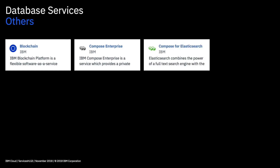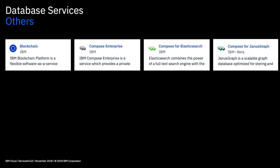Next up we have Compose for Enterprise — if you want to run one of these Compose services in a dedicated environment, you can do it with this service. Next we have Compose for Elasticsearch, which combines full-text searching with the indexing strength of a JSON document database, or NoSQL database, and it's essentially for rich data analysis on large volumes of data. Compose for JanusGraph is a graph database optimized for storing and querying highly interconnected data models with vertices and edges, which allows you to do queries that would not be possible with traditional RDBMS databases.